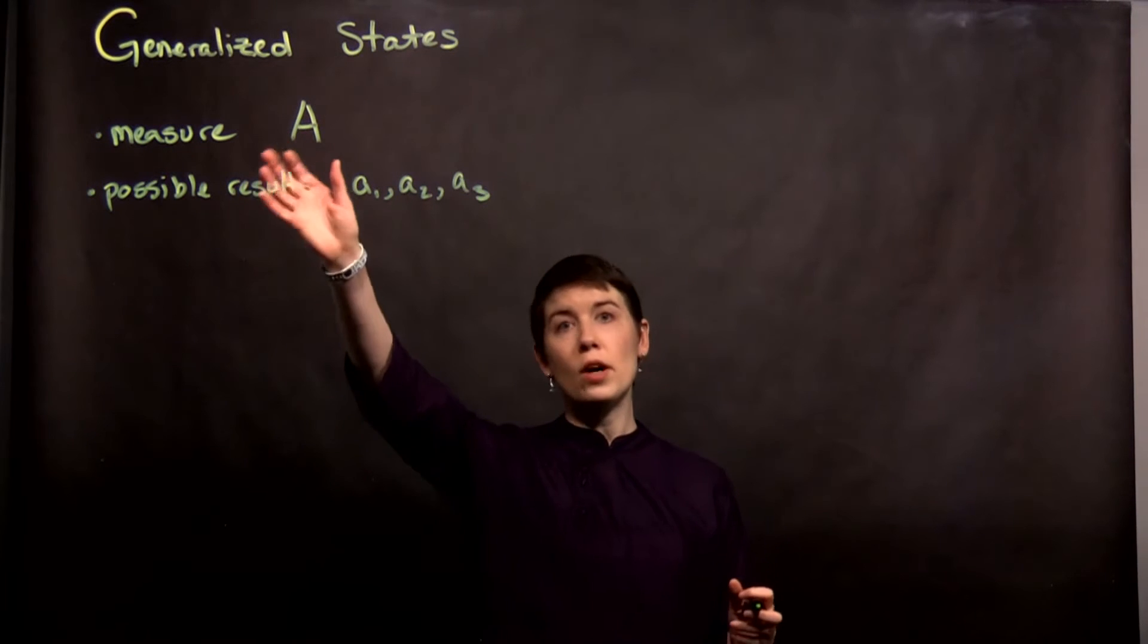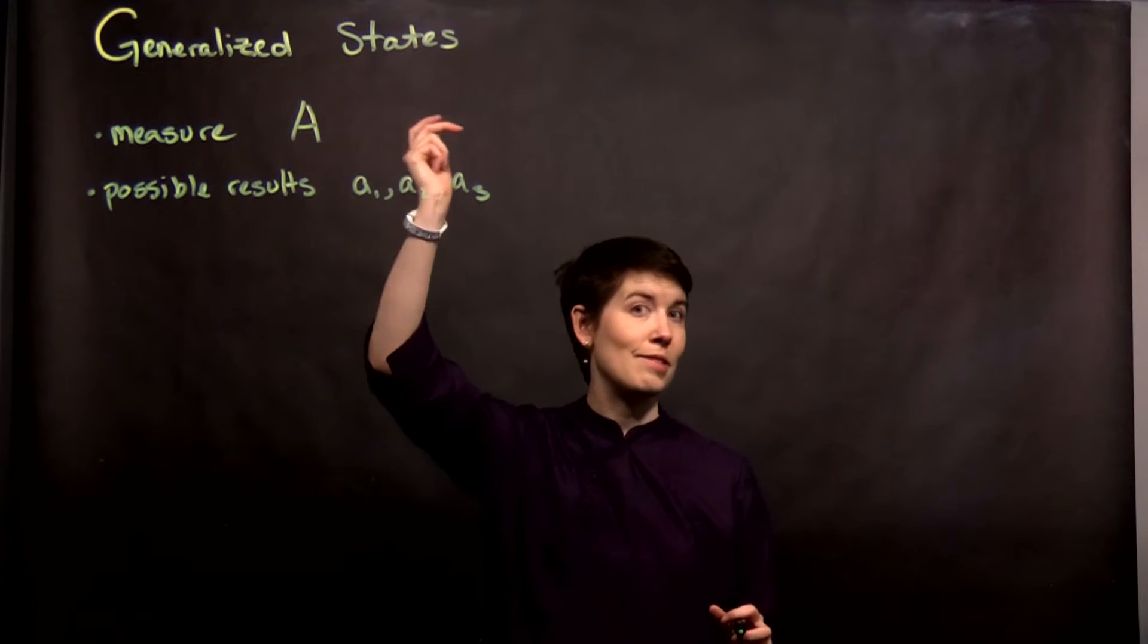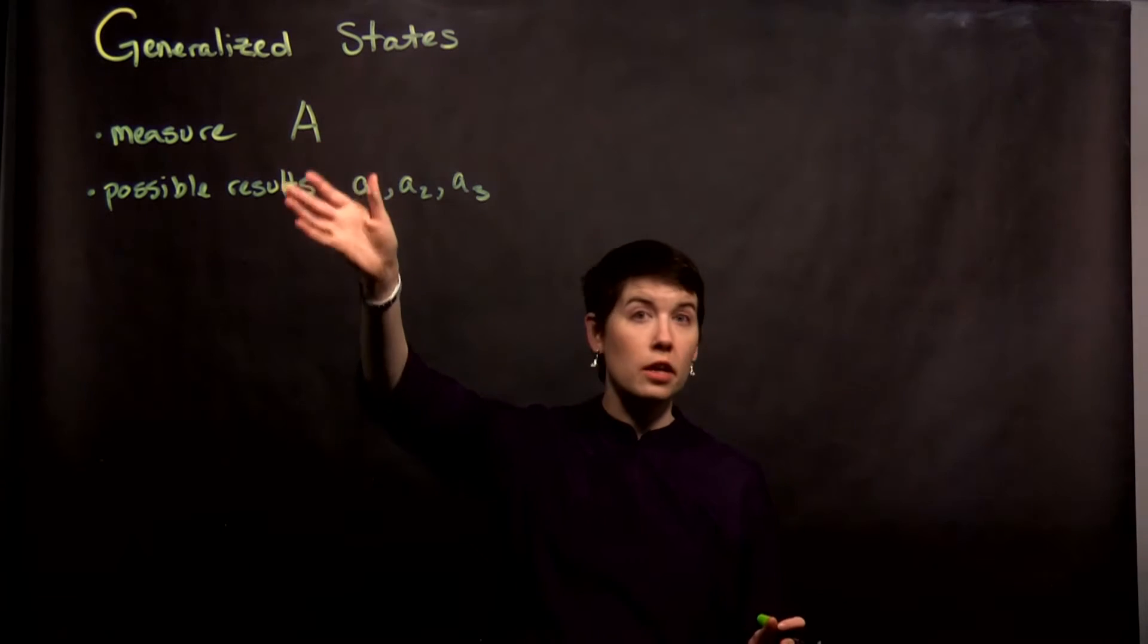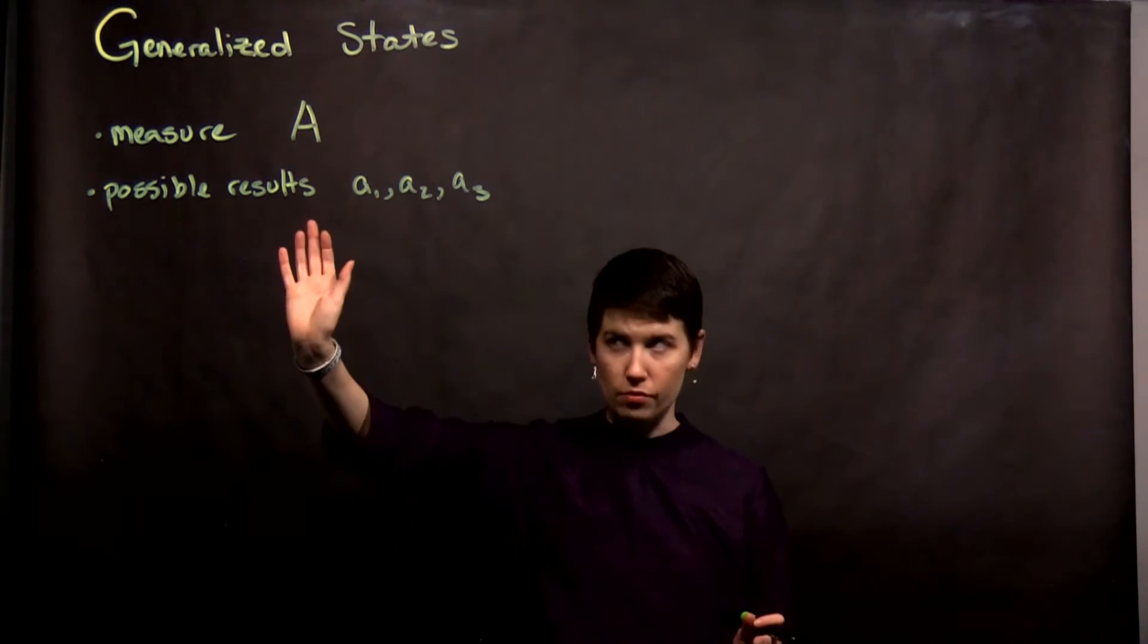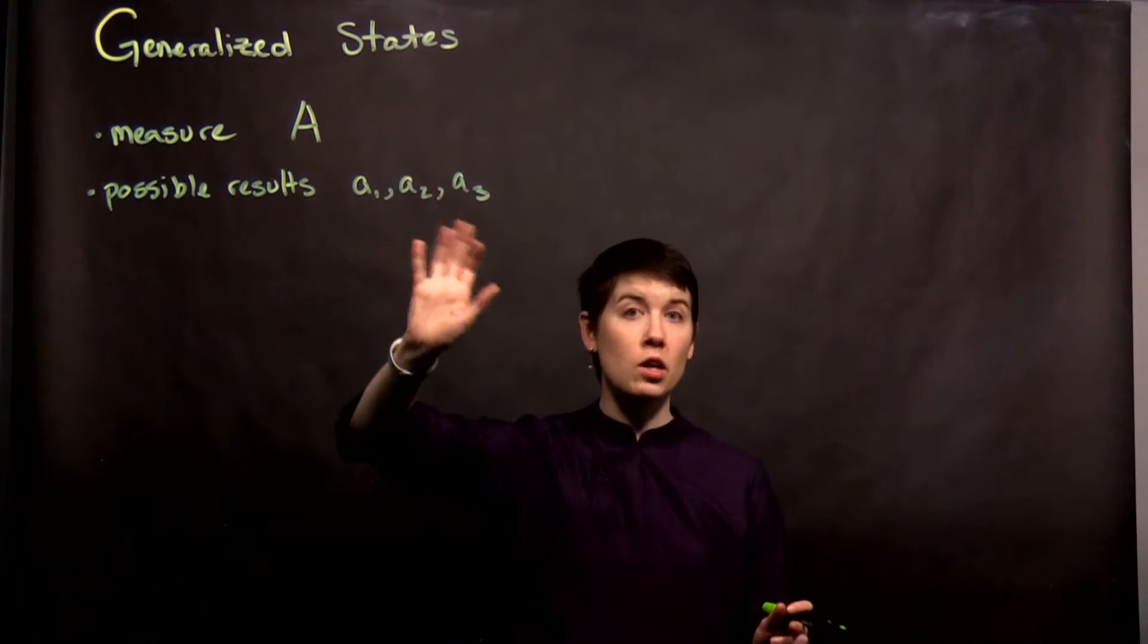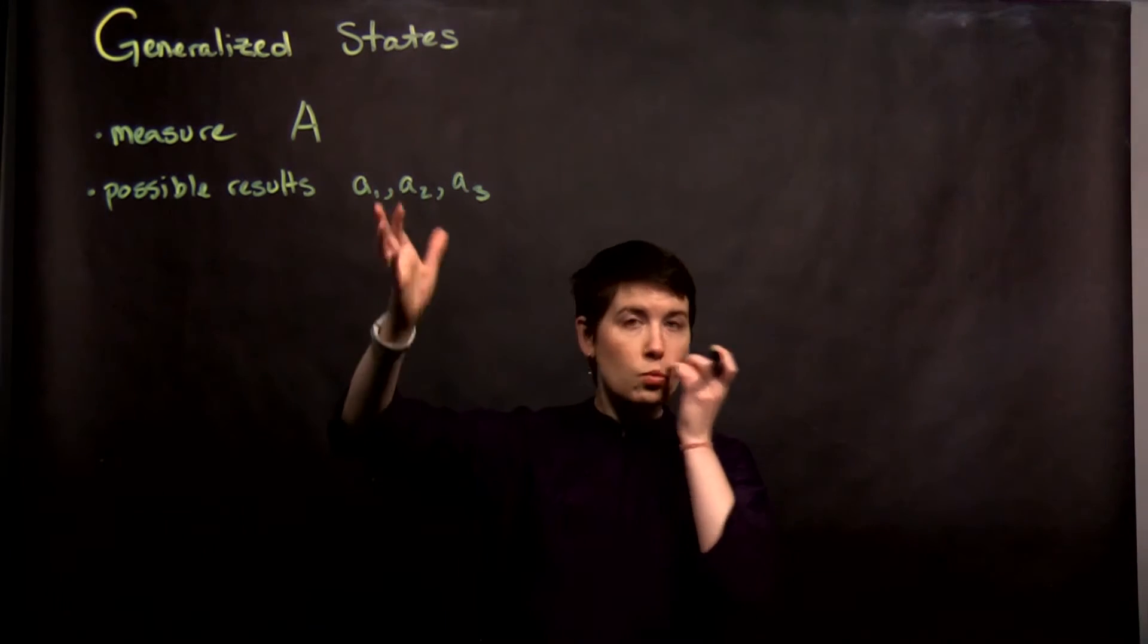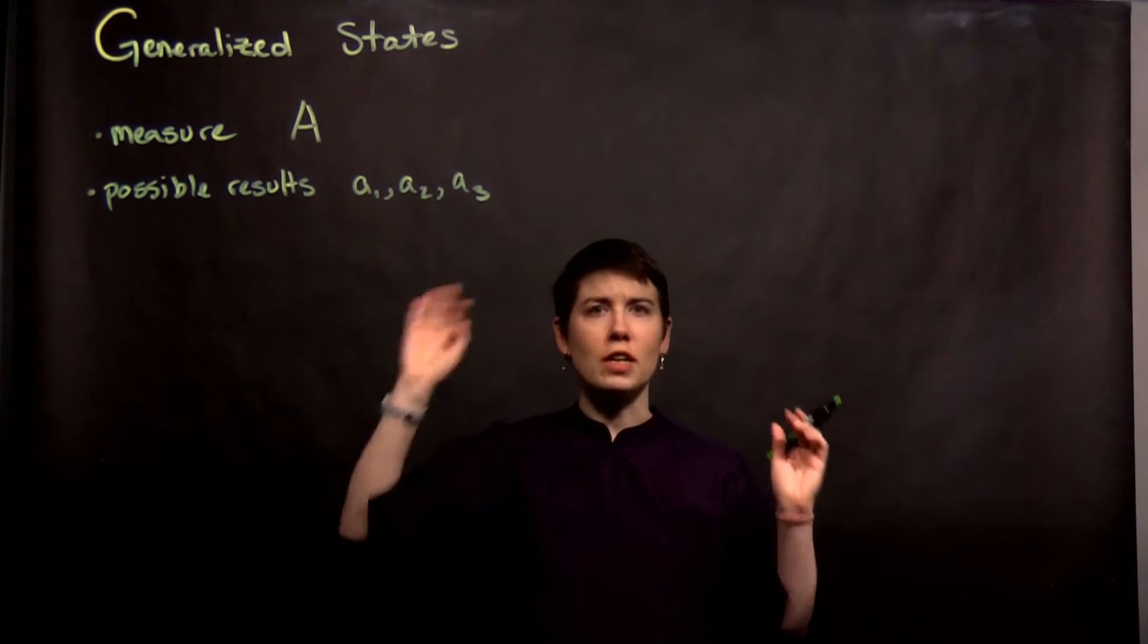Let's say that I want to measure a quantity and we would describe that operator as A. Maybe this is going to be energy, maybe this is spin 1, maybe this is something else totally different. We say that there's three possible results here. These would have numeric values, but we're trying to keep this very general.